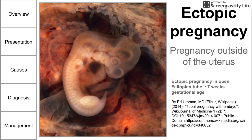Before we begin, this is an image of a well-preserved specimen from an ectopic pregnancy that is about seven weeks in gestation. The specimen was preserved in a fallopian tube, and you can see the fallopian tube surrounding what looks like a well-preserved human embryo that is about seven weeks old.